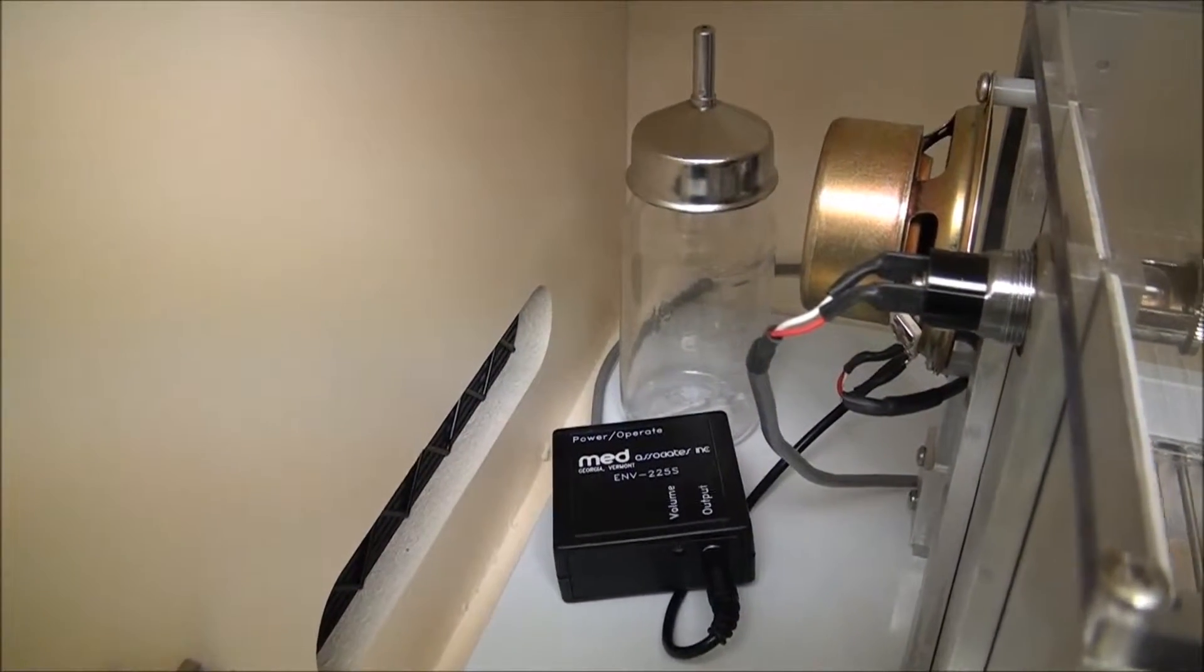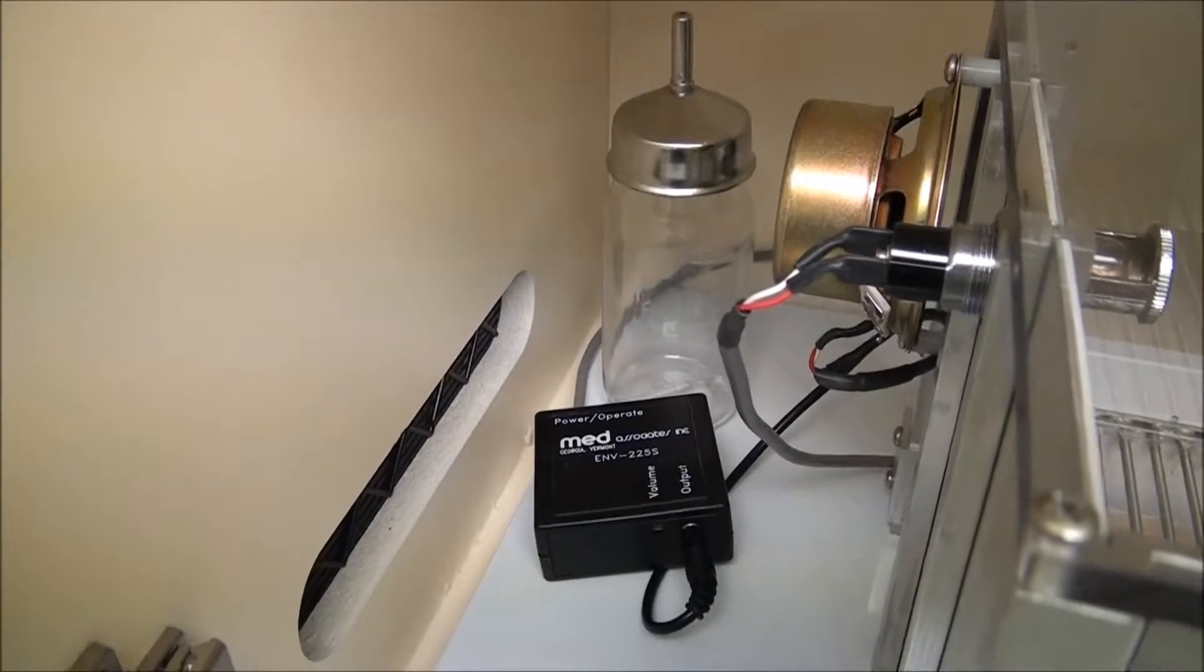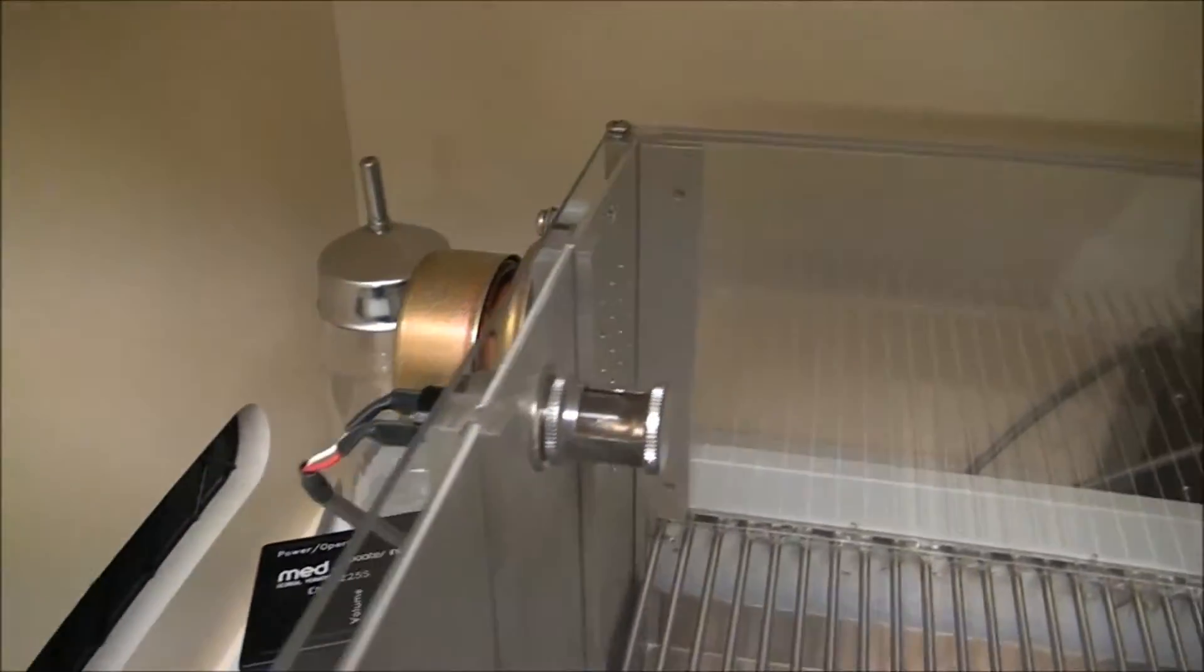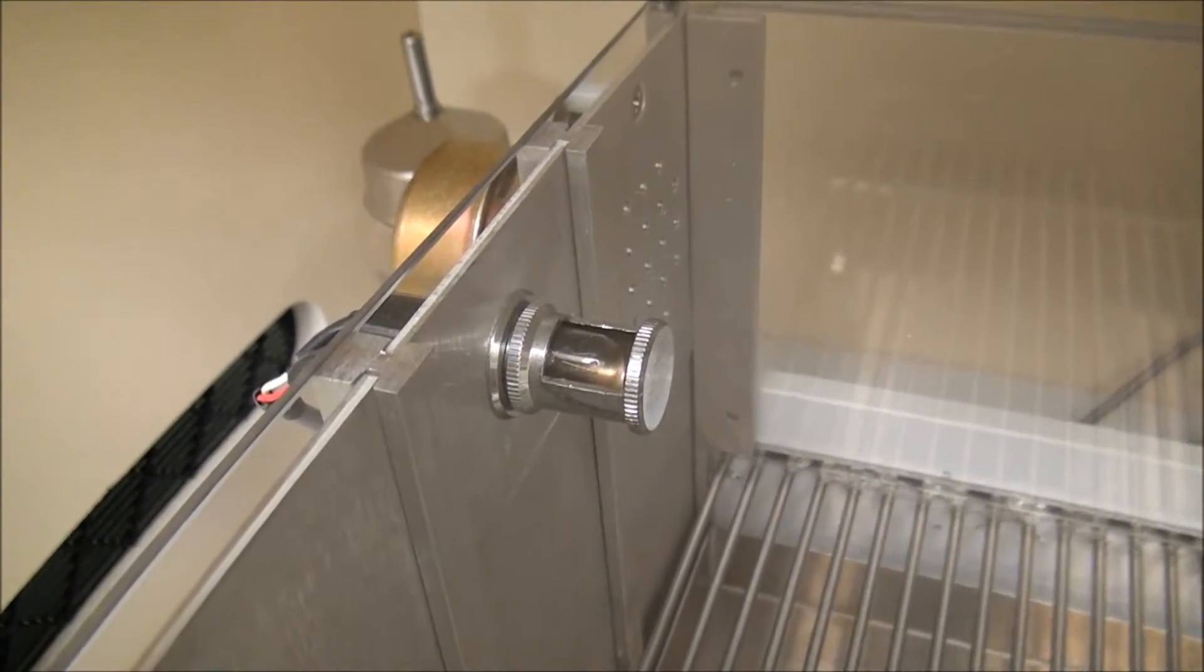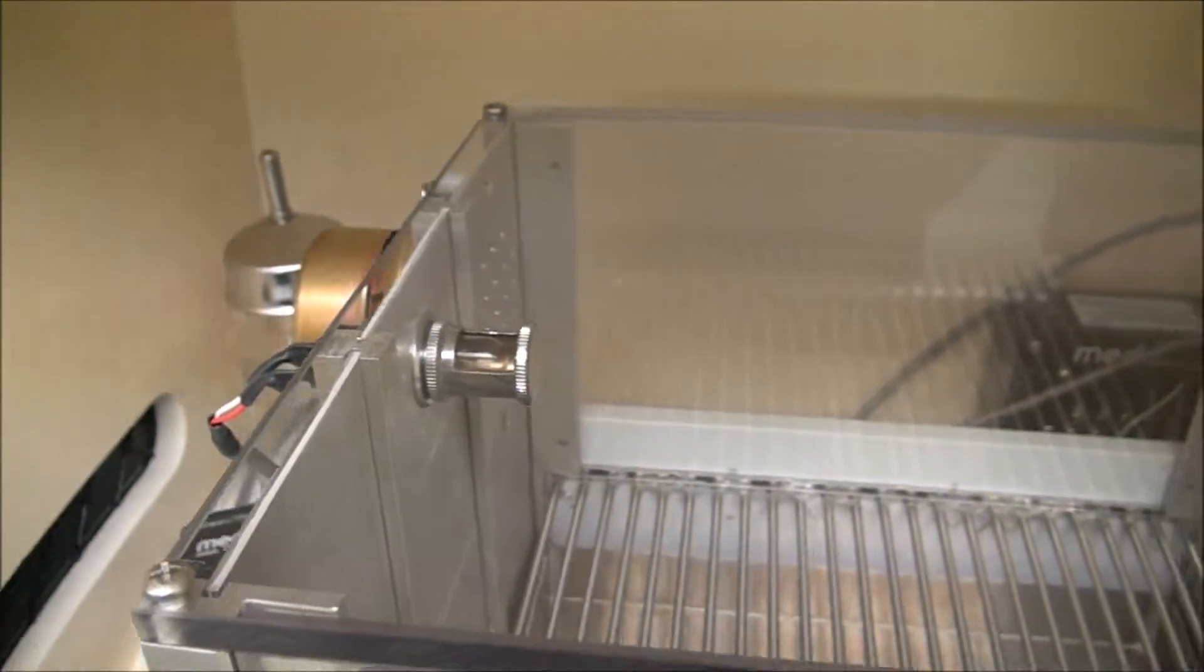So there's also the volume control built onto the box there. We can adjust it with a screwdriver. And then inside the chamber, you can see the house light that would be one of the outputs also.